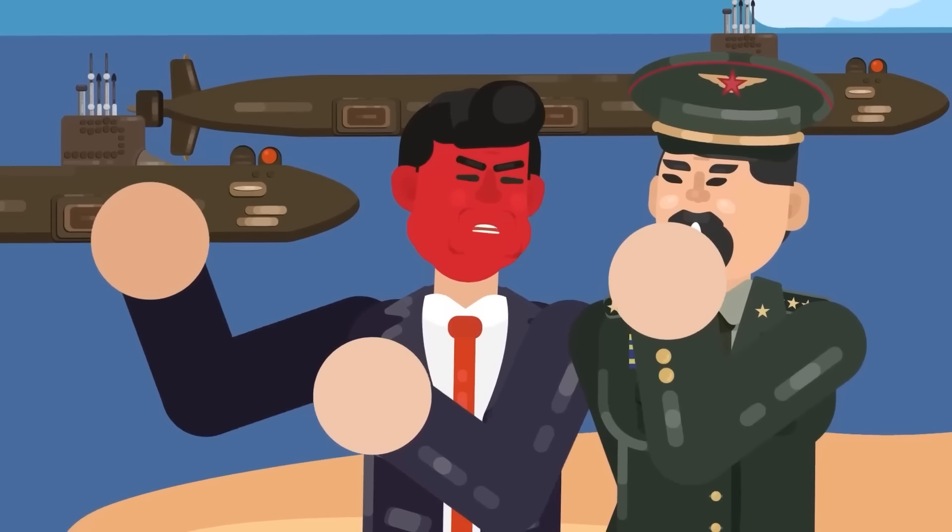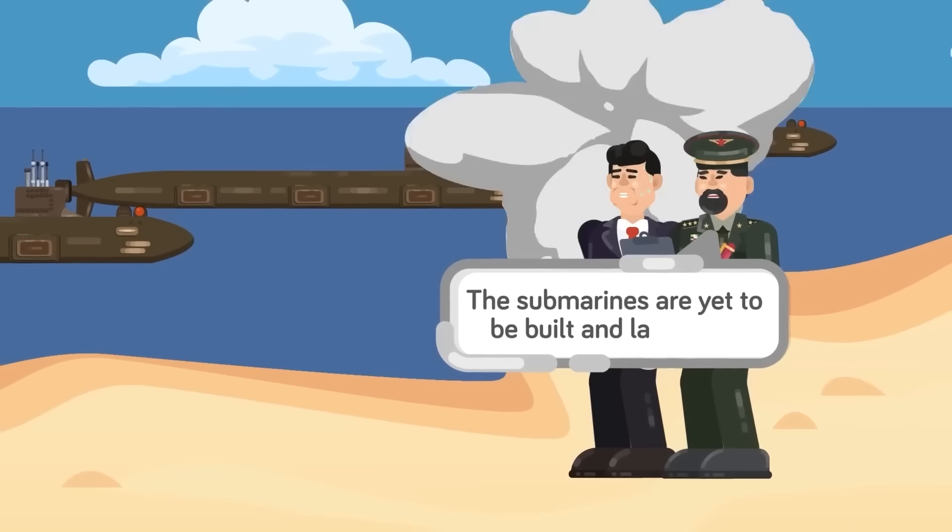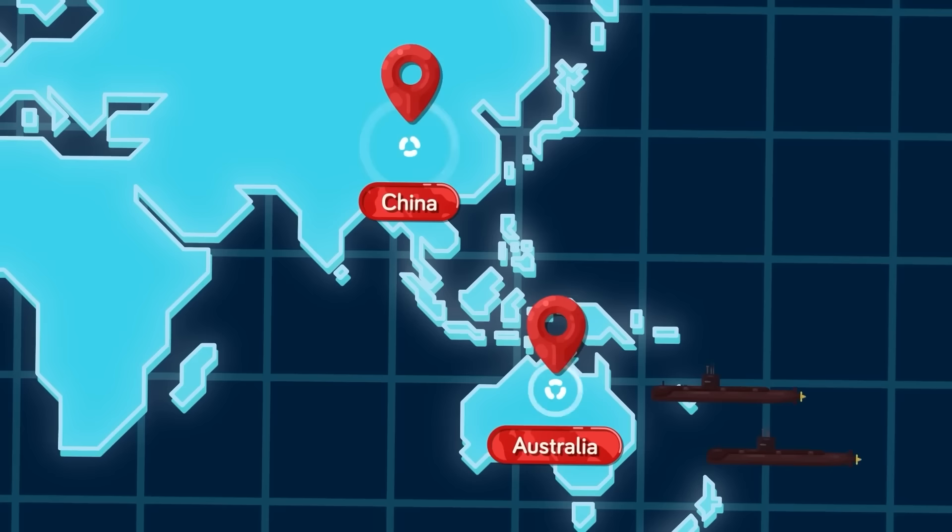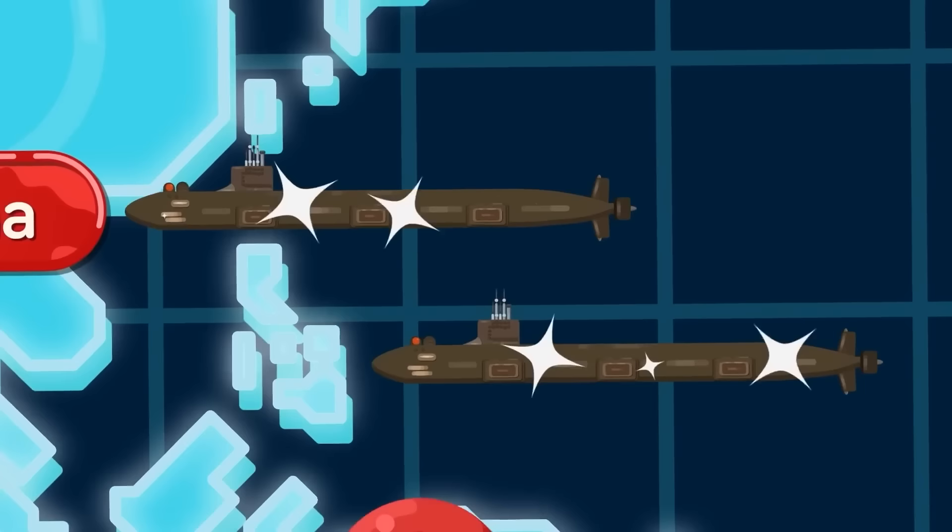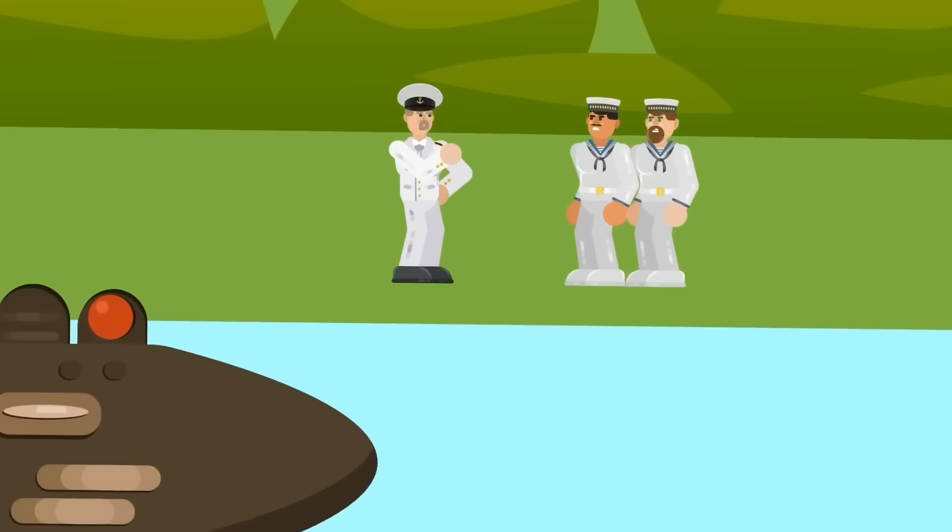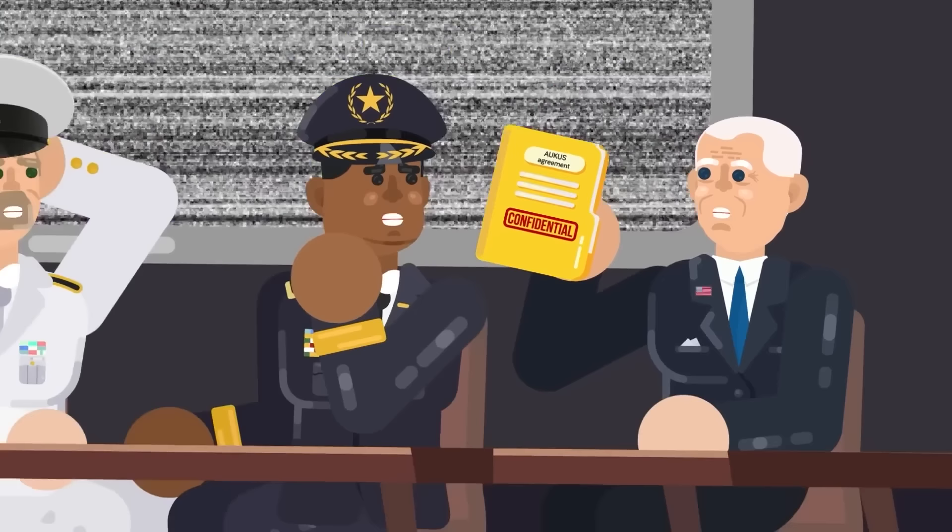There is no doubt that having these vessels patrolling Indo-Pacific waters is something that Beijing wants to avoid at all costs, but there is still time before these submarines will be built and launched, which is good news for China. What isn't such good news is that during the transition period between phasing out the Collins class subs and the new nuclear-powered vessels, the United States and the UK will deploy their own nuclear-powered submarines to the region to allow Australian soldiers to learn how to work the systems and engineers to work with the nuclear reactors. The United States likely jumped at the opportunity to deploy nuclear-powered subs to the region.